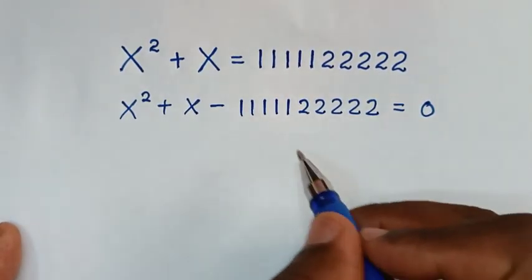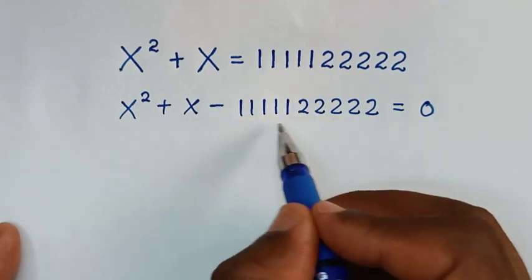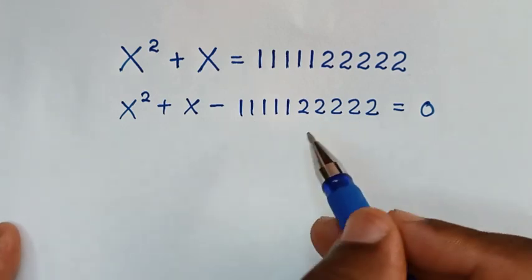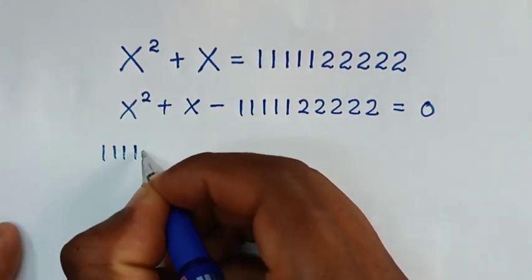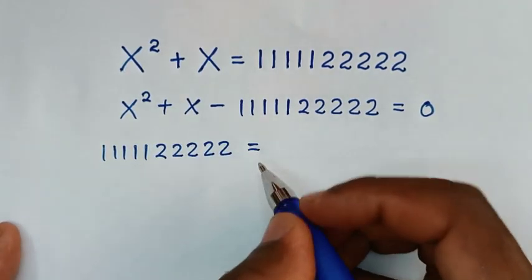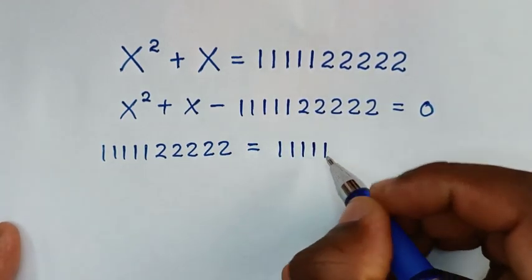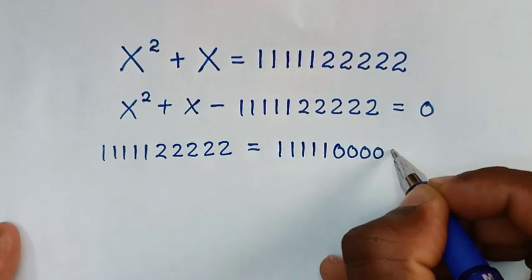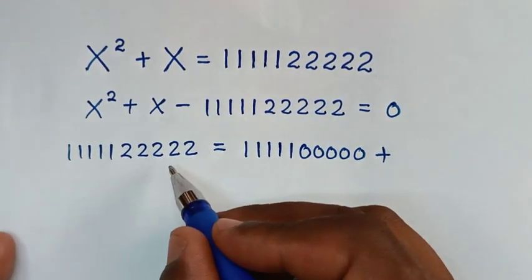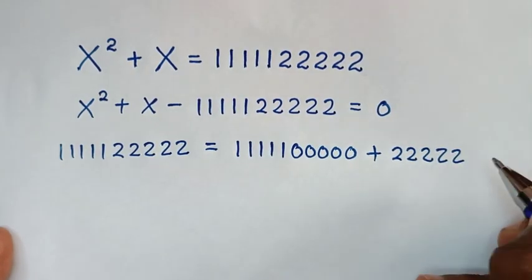Then, to make this problem easy to calculate, let's simplify this long number. So 1,111,122,222 equals the five 1s — that is 11,111 — followed by five zeros, plus the five 2s — which is 22,222. So it is 1,111,100,000 plus 22,222.